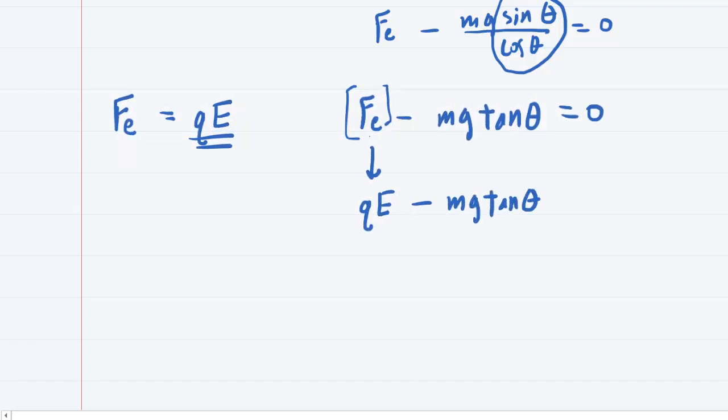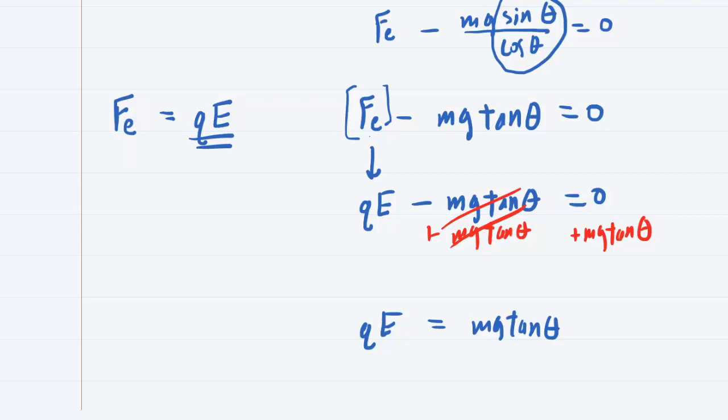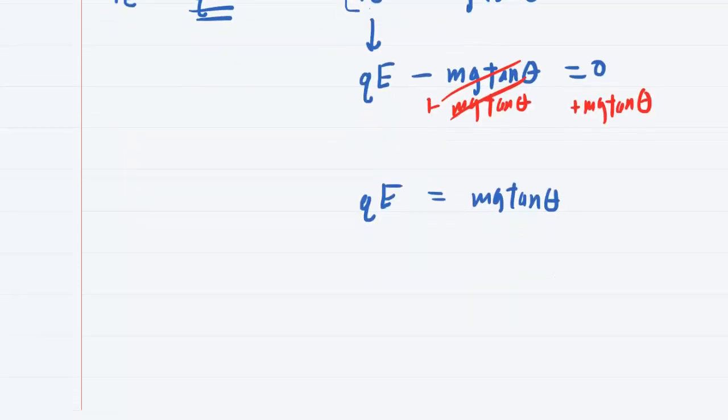So now we're really getting close here. We want to solve for the charge. Why don't we add mg tan theta to both sides of this equation. These will cancel out. So now we have qE equals mg tan theta, and finally, to get the charge q, we will divide both sides of this by the electric field.